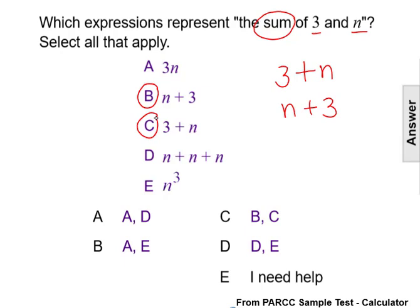We can't do it with choice D because even though there's addition in choice D, if we combine these like terms that would be 1n plus 1n plus 1n, which is 3n, not n plus 3. That's a product, not a sum.